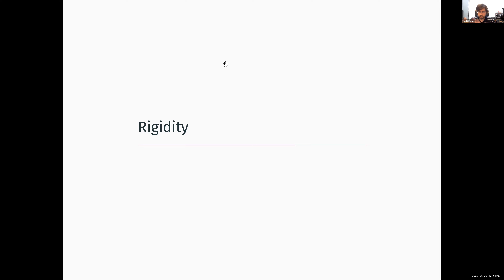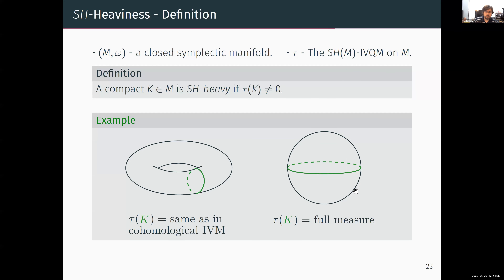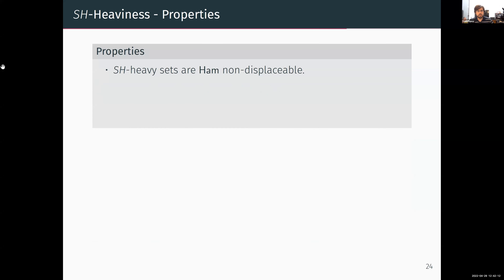Given a closed symplectic manifold and our symplectic homology IVQM τ, we say that a compact set K is SH-heavy if it has non-zero measure. On the sphere, the equator has full measure — its complement is two open disks, each exhausted by a displaceable compact. For meridians or latitudes on the torus, the IVQM coincides with the cohomological IVM. SH-heavy sets are Hamiltonianly non-displaceable. Moreover, if the product of measures of two sets is non-zero, each is SH-heavy and each is non-displaceable from the other using symplectic isotopies.